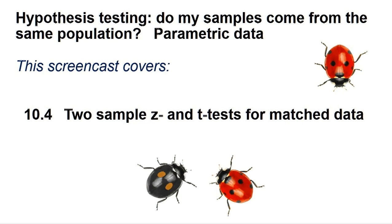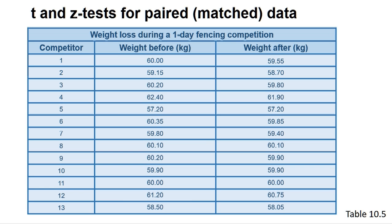Often in the Biosciences we measure an aspect of the same individual organism or objects before and after the application of a treatment, with the purpose of understanding whether that treatment causes a change in the measured attribute. For instance, in the example detailed in section 10.4 of the book, we look at the weight loss due to competing in a one-day fencing competition by measuring the weight of the individuals before and after competing.